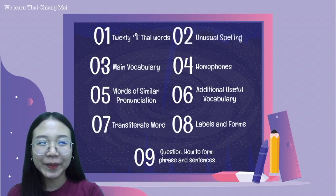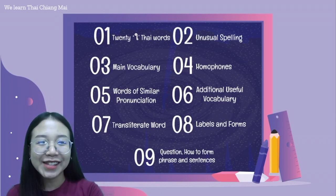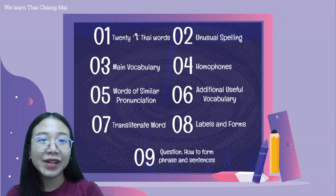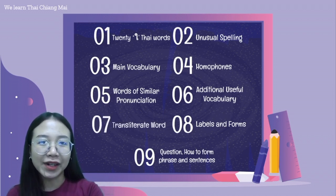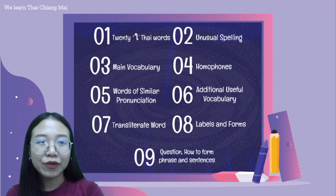Lesson 2: unusual spelling. Lesson 3: main vocabulary. Lesson 4: homophones. Lesson 5: words of similar pronunciation. Lesson 6: additional useful vocabulary. Lesson 7: transliterate words. Lesson 8: labels and forms. Lesson 9: questions — how to form phrases and sentences.